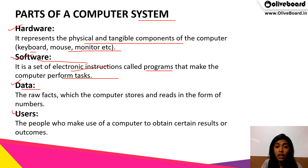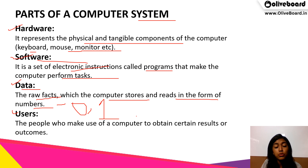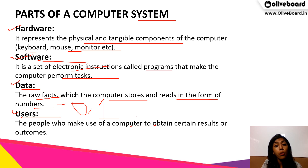The third component is data. Data is the raw facts which the computer stores and reads in the form of numbers — 0 and 1 as we know it. The fourth is users — the people who make use of the computer to obtain certain results or outcomes. So we are called the users.